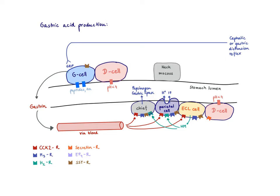The G cells sit particularly in the antrum. And where do we find the parietal cells — the cell that finally makes the acid? They are particularly found in the corpus and the fundus. That means that gastrin needs to travel via the blood to stimulate the parietal cell.